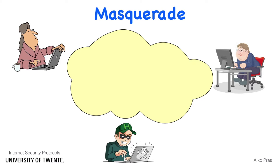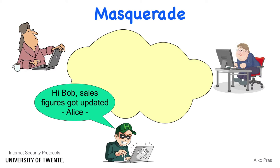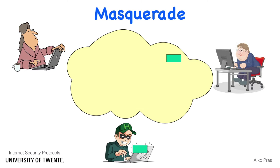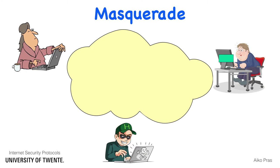Masquerade is the attack in which an attacker pretends to be someone else. For example, the attacker could send updated sales figures to Bob and sign the email as Alice. The email will lead to a series of packets over the internet that are received by Bob.